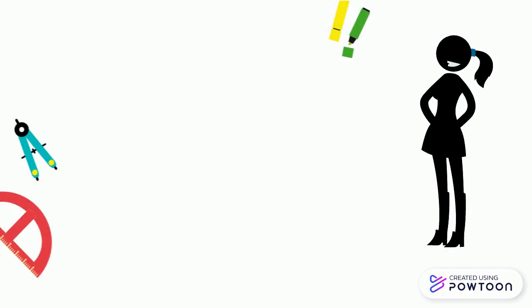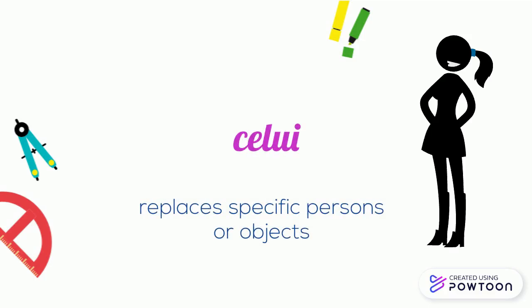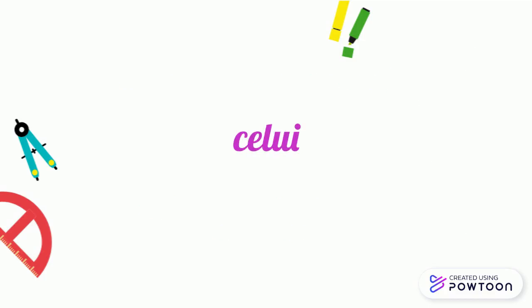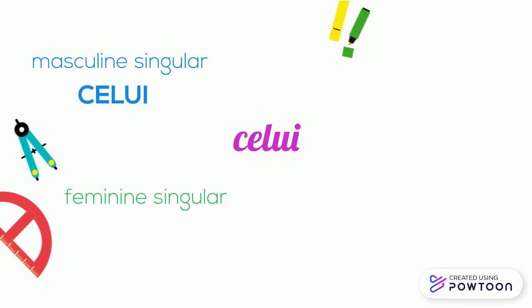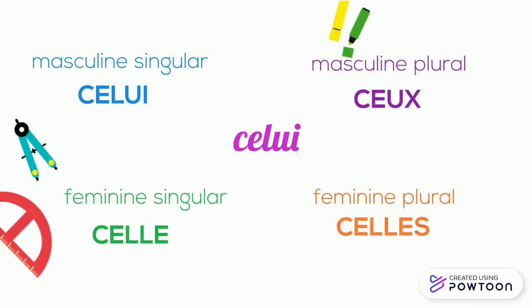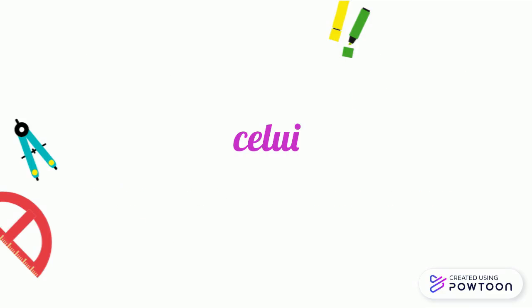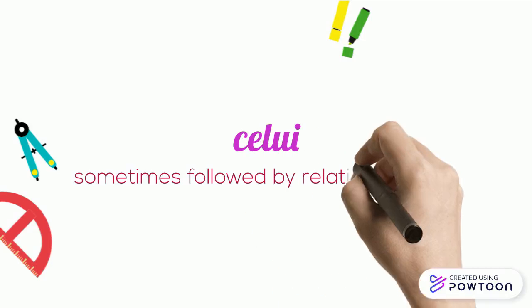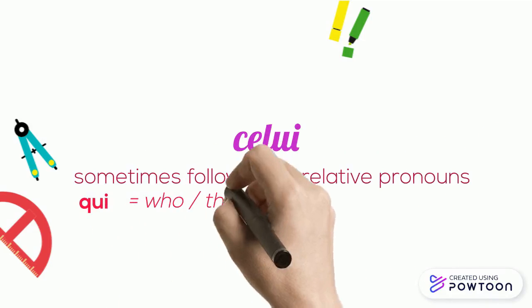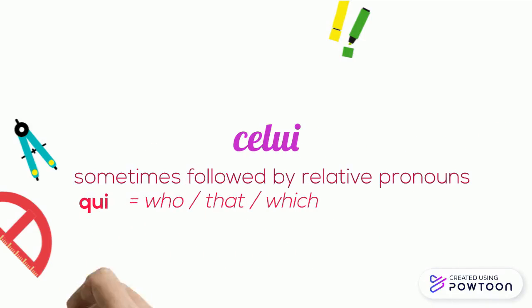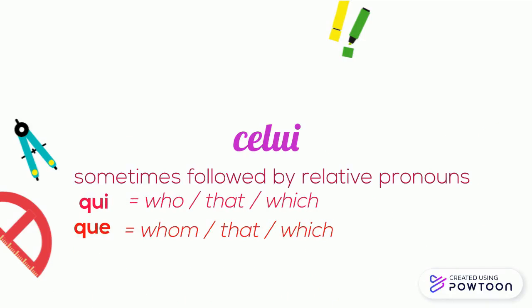Finally, the demonstrative pronoun 'celui' replaces specific persons or objects. It means 'that one' or 'the one that.' Its forms are: masculine singular 'celui,' feminine singular 'celle,' and masculine plural 'ceux.' 'Celui' is sometimes followed by the relative pronouns 'qui' (who/that/which) or 'que' (whom/that/which).